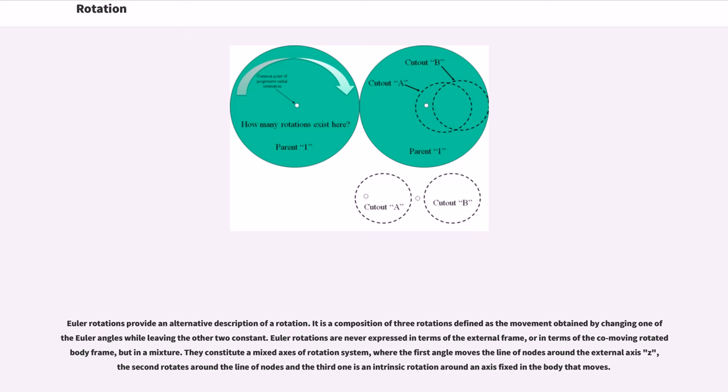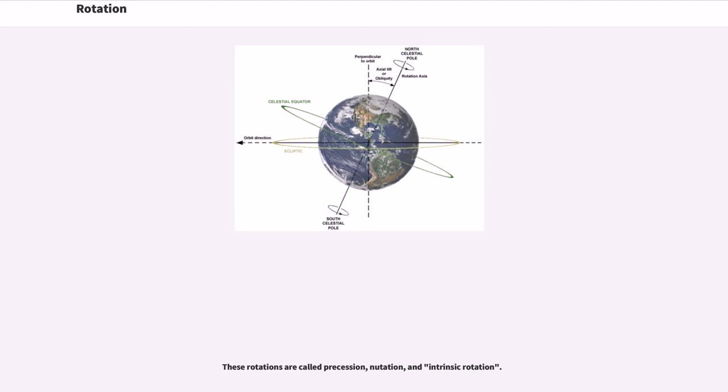The first angle moves the line of nodes around the external axis C, the second rotates around the line of nodes and the third one is an intrinsic rotation around an axis fixed in the body that moves. These rotations are called precession, nutation, and intrinsic rotation.